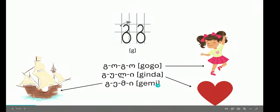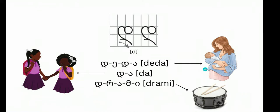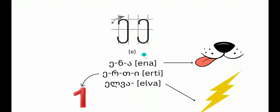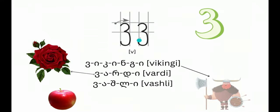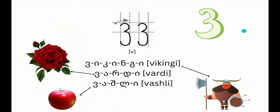B - babua. I painted B like a cherry because it has the shape of cherry. G - gogo. D - deda. E - erti, elva.